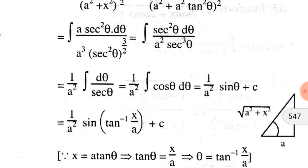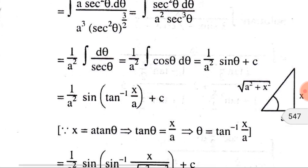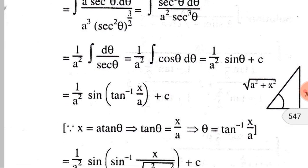Now since we considered x = a·tan θ, we have θ equals tan⁻¹(x/a). So in place of θ, substituting tan⁻¹(x/a), we can write (1/a²)·sin(tan⁻¹(x/a)) plus C.